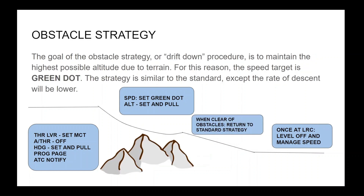The goal of the obstacle strategy, or drift down procedure, is to maintain the highest possible altitude due to terrain. For this reason, the speed target is green dot. The strategy is similar to the standard, except the rate of descent will be lower.